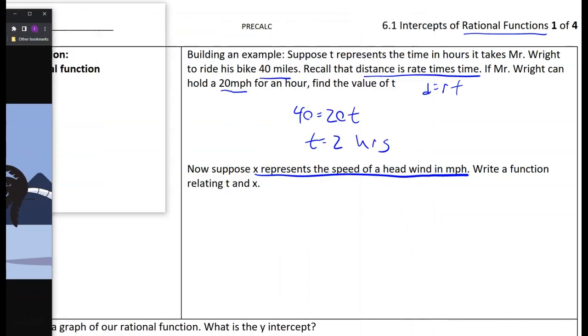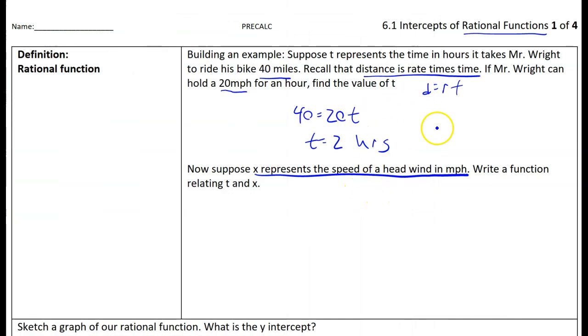Instead of my rate being just 20 miles per hour flat, my rate is going to be 20 minus the headwind because the headwind is going to slow me down.